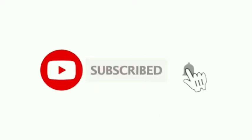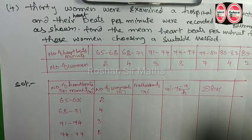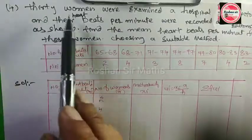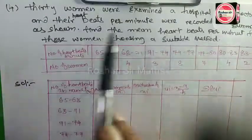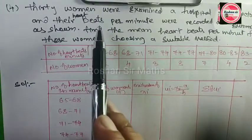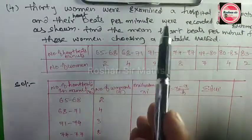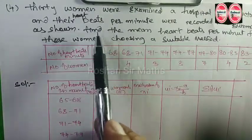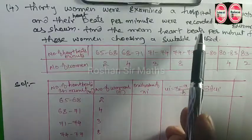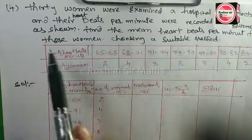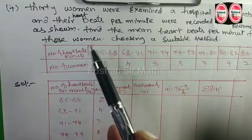Hello students, welcome to my channel. This is Roshan Sir Math. Next exercise 14.1, fourth question. This question states that 30 women were examined in a hospital. A doctor measured their heart beats per minute, and the data is recorded and summarized as shown.